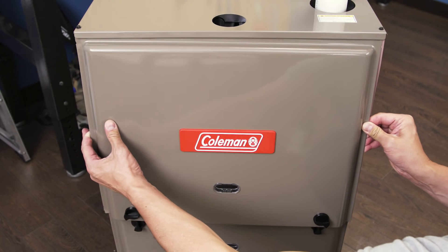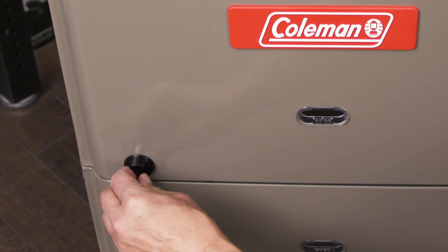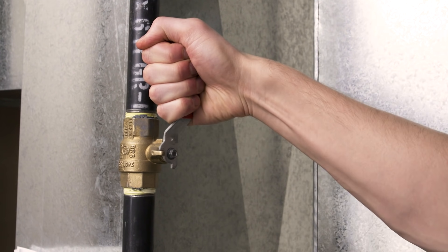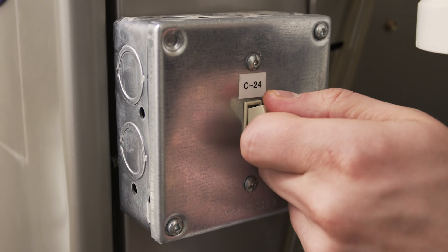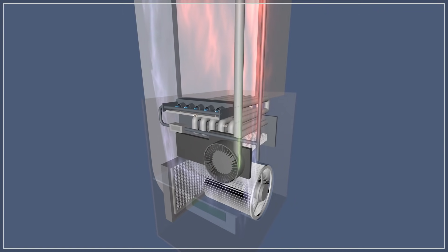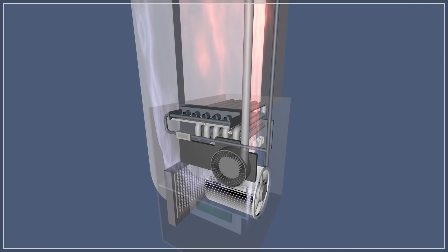Now replace the upper cover. Next open the gas valve. Now turn on the power to your furnace. The furnace should be running normally.